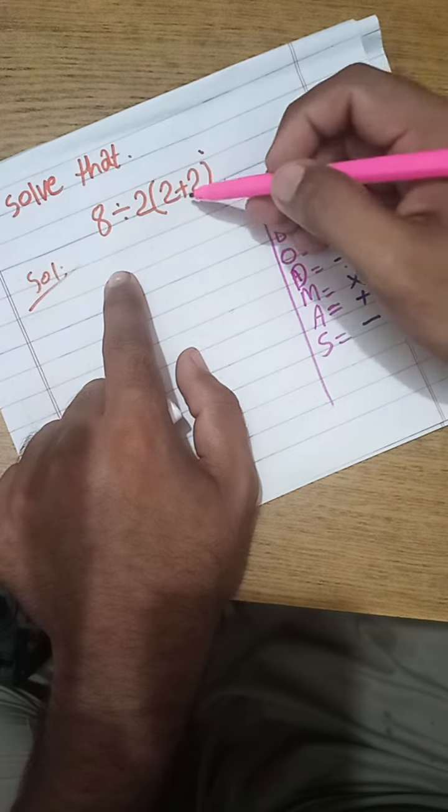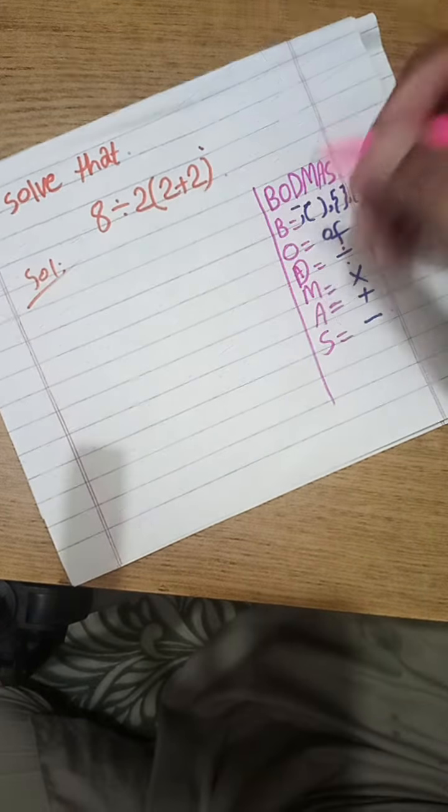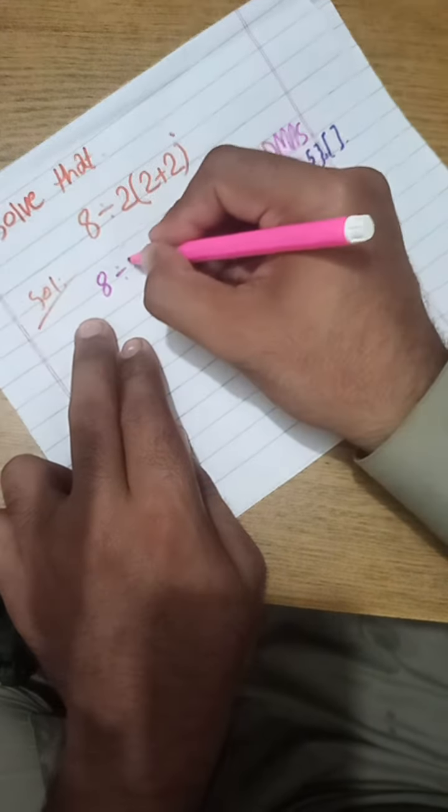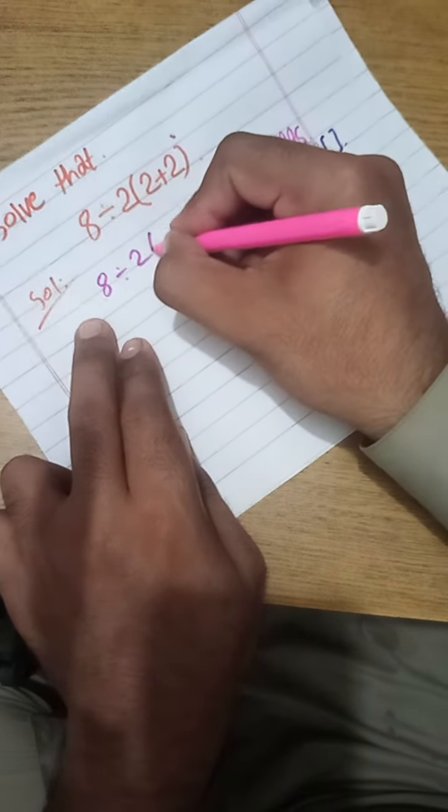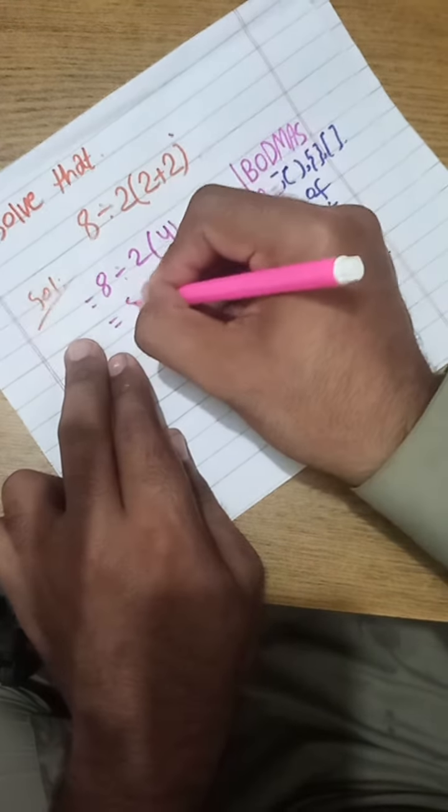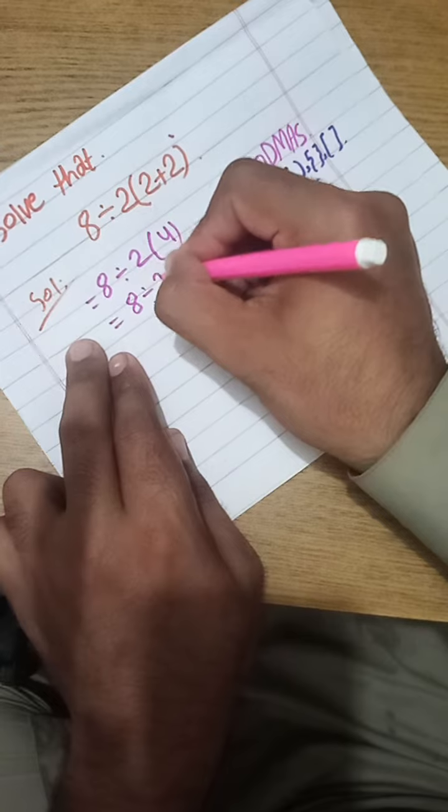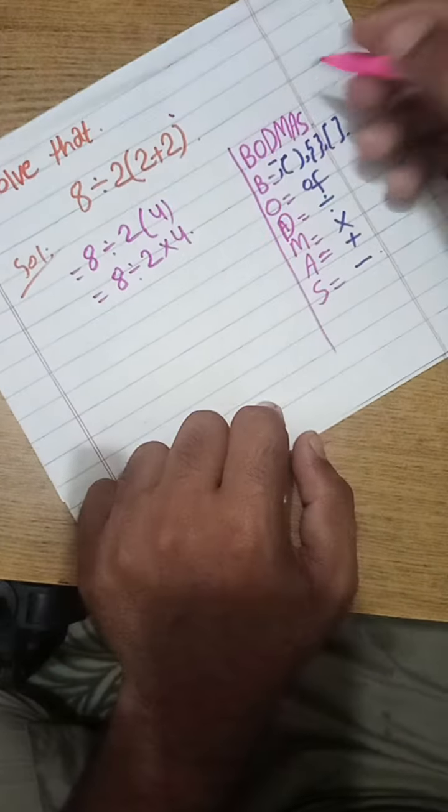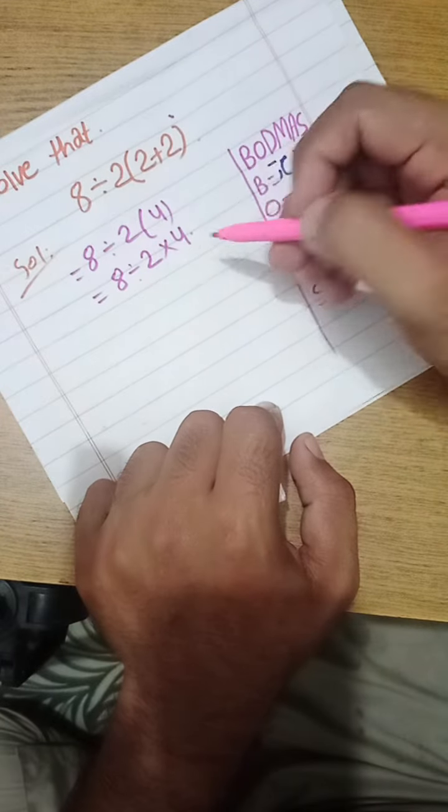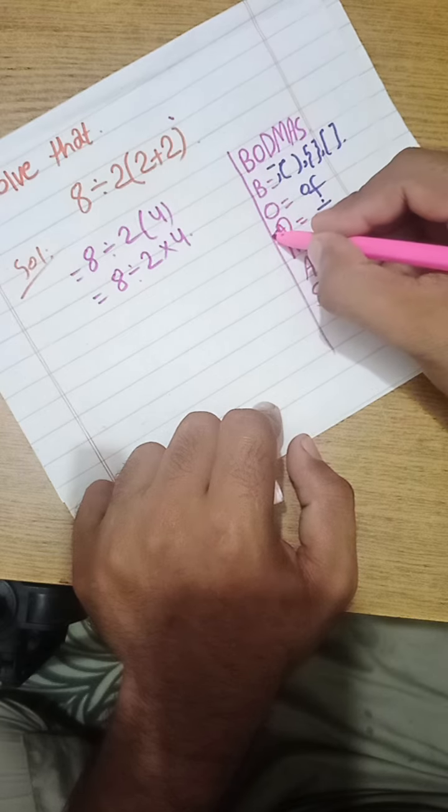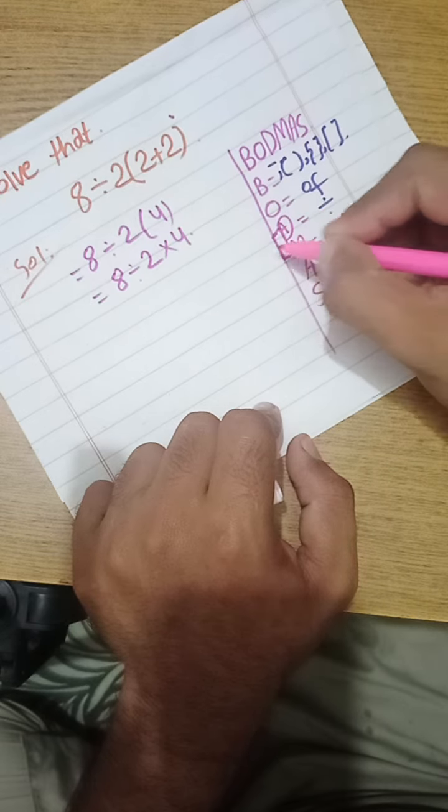Which says first of all solve this curve bracket and solve that: 8 divided 2 into 2 plus 2 equals 4. Solve that: 8 divided 2 multiply 4. By BODMAS rule, 8 divided 2 multiply by 4, which gives division and subtraction have equal priority.